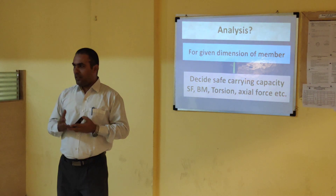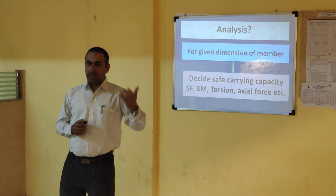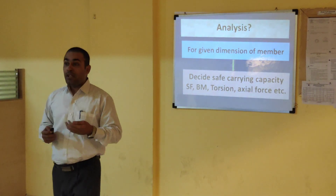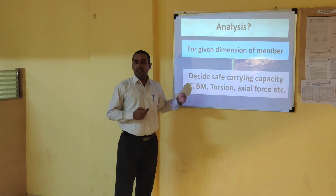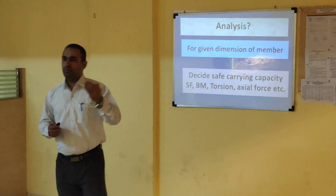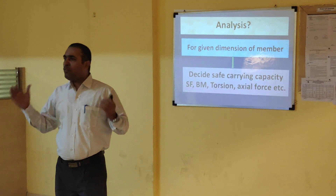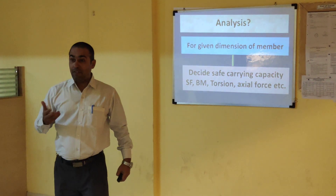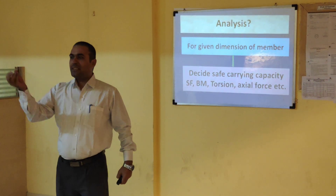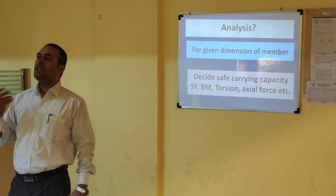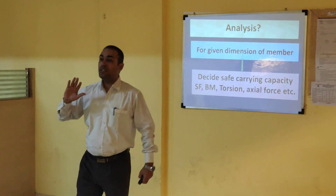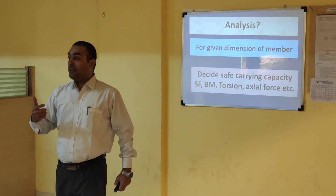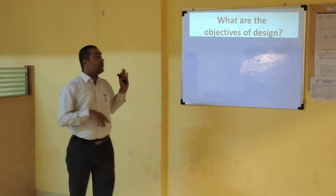Most software is used for design of structural members. But the role of the structural engineer — the civil engineer — is to have judgment. The civil engineer should be able to judge whether the input given and the output received are correct or not. For example, for a 5-meter span, if you get a beam depth of 1 or 2 meters, you should know that is wrong. The thumb rule is: for 1 meter span, maximum depth is about 100 mm. For 5 meters, the depth should be about 500 mm. This judgment is why civil engineers are the ones who should use the software.